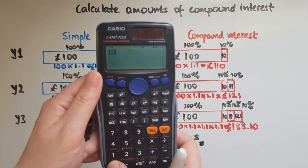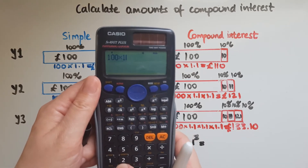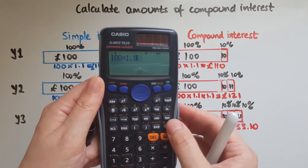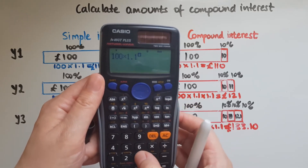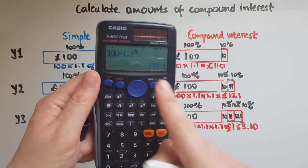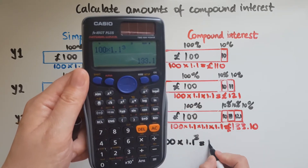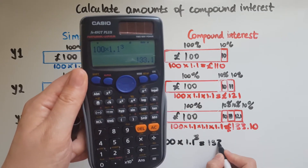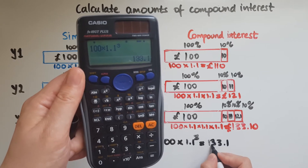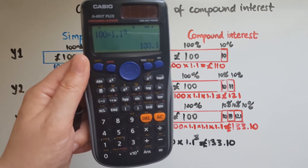Using a calculator: one hundred times one point one to the power of three gives us one hundred and thirty three point one — which is one hundred and thirty three pounds and ten pence — confirming our earlier answer.